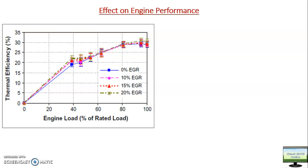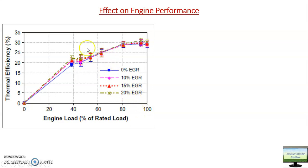This first graph shows thermal efficiency on the y-axis and engine load (percentage of rated load) on the x-axis. The blue line is 0% EGR and other lines are different EGR percentages. At lower load below 40%, thermal efficiency is slightly increasing with EGR, but at higher load the difference is insignificant. Most tractors or diesel engines operate in the 40–80% load range, and in that range the effect on thermal efficiency is not very significant.